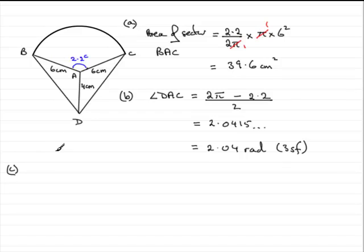And to do that, we'll just add the area of the sector that we found in part A, 39.6 cm², and then we've got to add together the area of these two triangles, ADC and ABD.